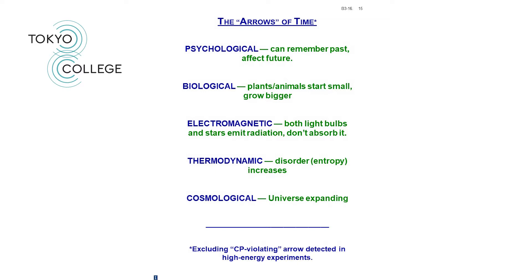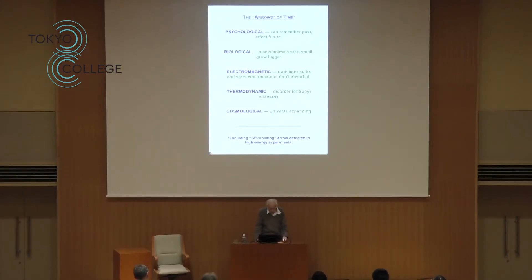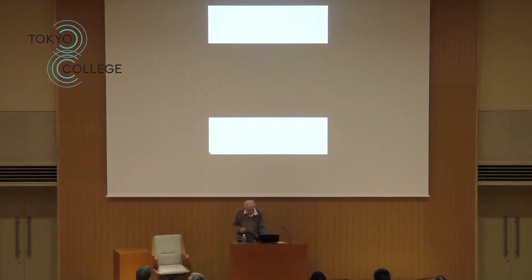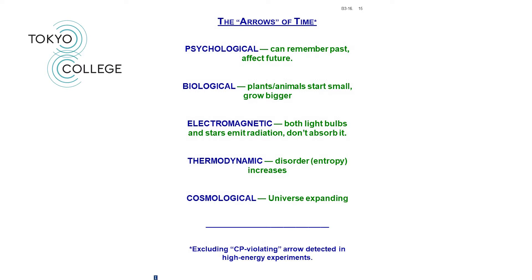There's the electromagnetic arrow of time. Apparently, both light bulbs and stars emit radiation and don't absorb it, even though the basic laws of electromagnetism are consistent with them doing both. So this is the movie. This is some source emitting radiation. And now if we go on, you see that solution is also consistent with the laws of electromagnetism. So why doesn't it occur? There's the thermodynamic arrow of time, which we've already noticed that disorder or entropy increases. And finally, there's the so-called cosmological arrow of time. As far as we know, the universe right now is expanding and not contracting.